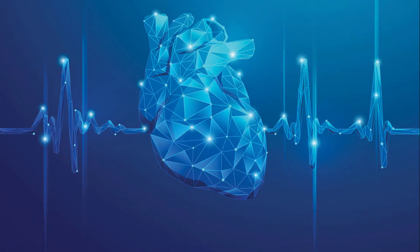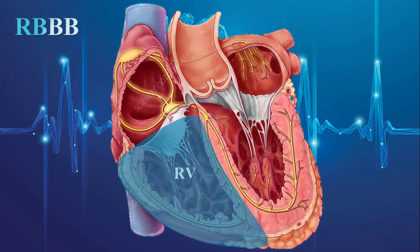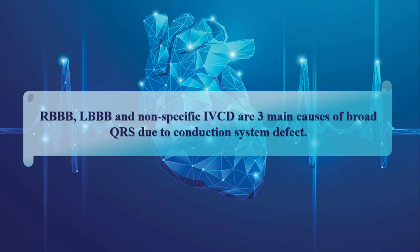Right bundle branch block, or RBBB, is a kind of ventricular conduction defect that interrupts impulse conduction in the right ventricle. Any kind of disturbance in the conduction system, including RBBB, can cause QRS widening. Therefore, RBBB, LBBB, and nonspecific IVCD are three main causes of broad QRS due to conduction system defect.